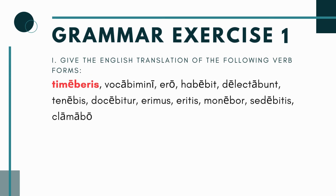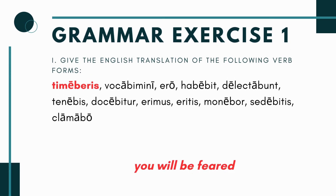Grammar exercise one starts like this — there are three parts. Part one says: give the English translation of the following Latin verb forms. You have about 15 of them, and you're trying to figure out how to translate them based on whether they're active or passive and what person and number they are.